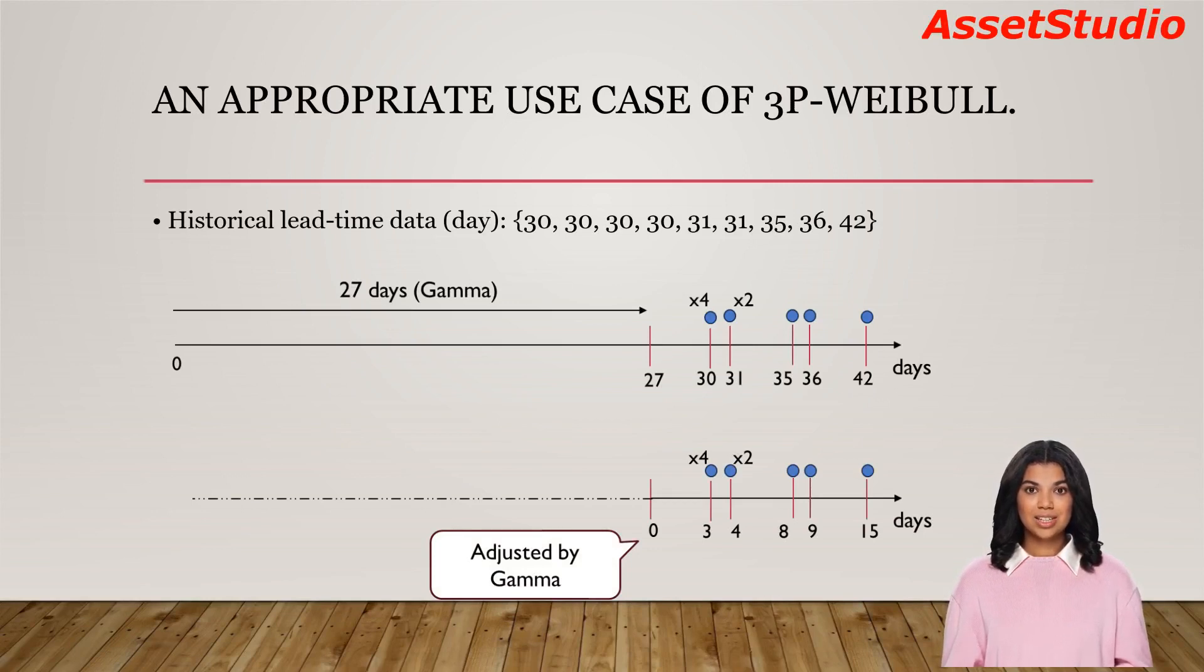The following dataset contains arrival time of a spare part from a manufacturer. You need a distribution to describe the lead time for simulation purpose. As shown here is the historical lead time dataset. You are aware that the admin plus shipment time is 27 days, that is, lead time cannot be shorter than 27 days.